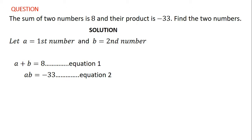With these two equations we should be able to find a and b. In this type of simultaneous equation we are going to use the substitution method — it would be difficult to use the elimination method here. In the substitution method, you make one of the variables the subject in one equation and then substitute it into the other equation.